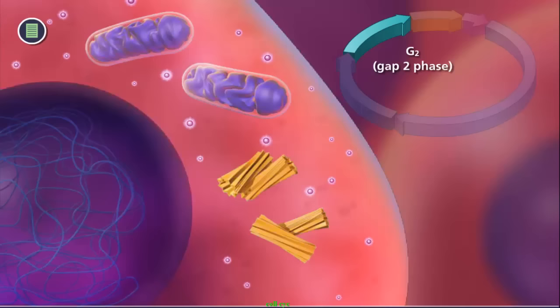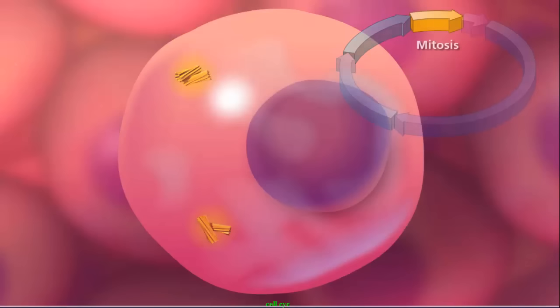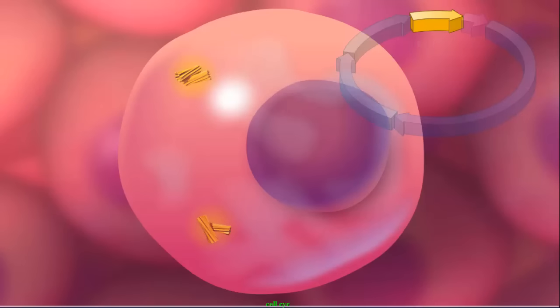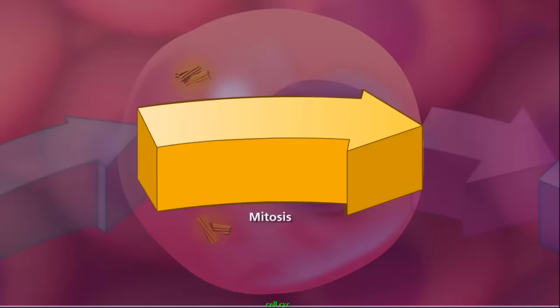Most eukaryotic cells spend a great deal of time in interphase, and a very short period of time actually dividing, a process called mitosis.